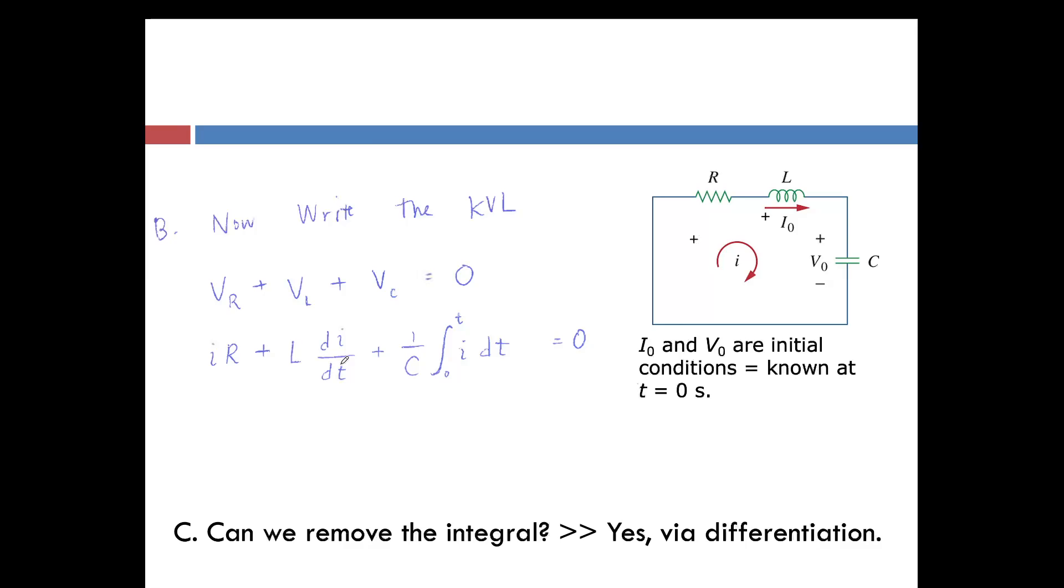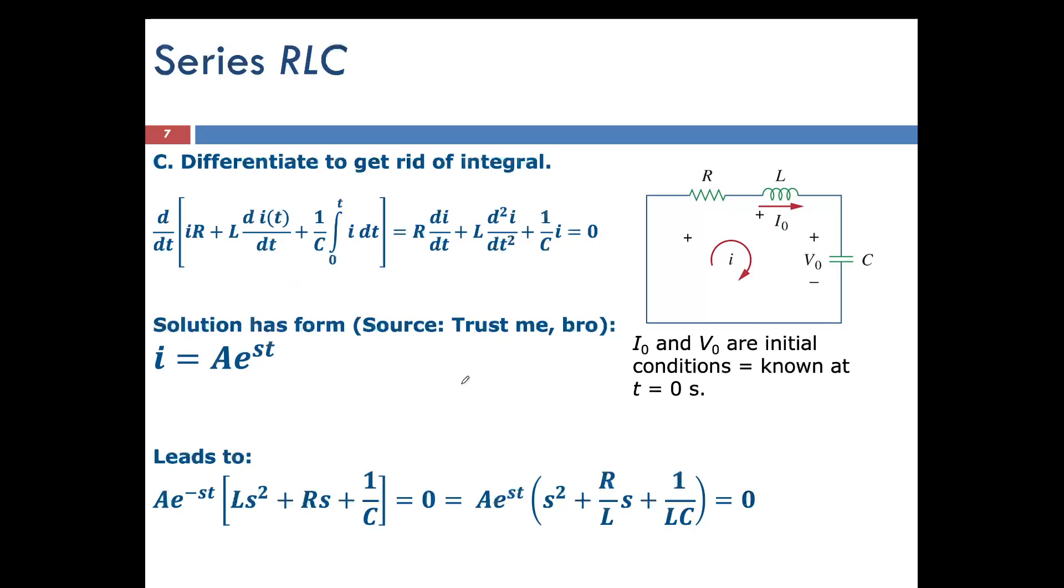We write the KVL and we see that we now have three terms. This term is a derivative, this one's an integral. Let's remove the integral and come up with all derivatives. We'll differentiate both sides. Now we have an equation that has a first derivative, a second derivative, and I, some current that we're interested in.